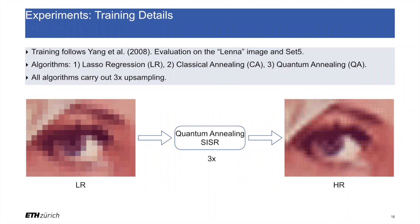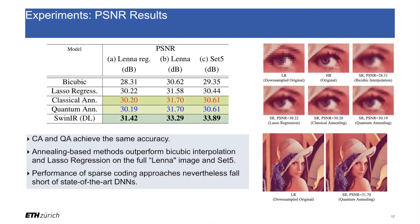To train our algorithms, we followed the approach of Yang Jianchao and colleagues, 2008, and evaluated on the standard image set five. We developed three algorithms in total: lasso regression, which carries out conventional sparse coding; classical annealing, which solves super-resolution by simulated annealing on a conventional computer; and quantum annealing. All algorithms carry out three times upsampling. Following evaluations, we found that classical annealing and quantum annealing achieve the same accuracy. Annealing-based methods outperformed cubic interpolation and conventional sparse coding on the full set five. However, as expected, sparse coding approaches nevertheless fall short of state-of-the-art deep neural networks such as SWIN IR.